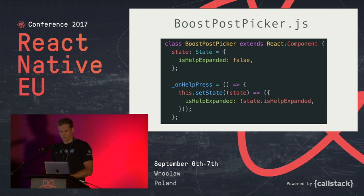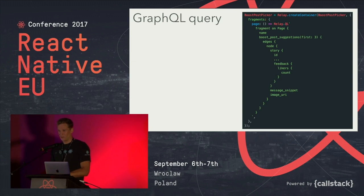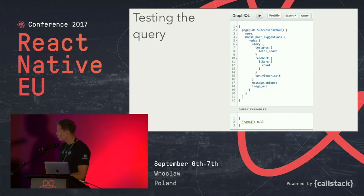The React Native component is a standard React component — it has some state, uses Flow, and standard stuff just like on the web. Inside it is a GraphQL query, because Facebook uses GraphQL for all data fetching. So not only do you have styles inside your JavaScript code, but you also have a query — everything in one file. The library used for this is Relay.